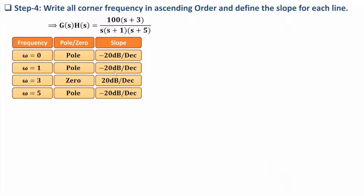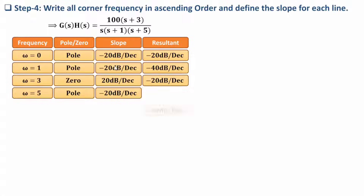We note down all those slope changes and then identify the resultant slope for each segment. The first line slope is −20 dB/decade. After the corner at ω = 1, the resultant slope is −20 + (−20) = −40 dB/decade. After the corner at ω = 3 (a zero), it becomes −40 + 20 = −20 dB/decade. After the corner at ω = 5, it becomes −20 + (−20) = −40 dB/decade.